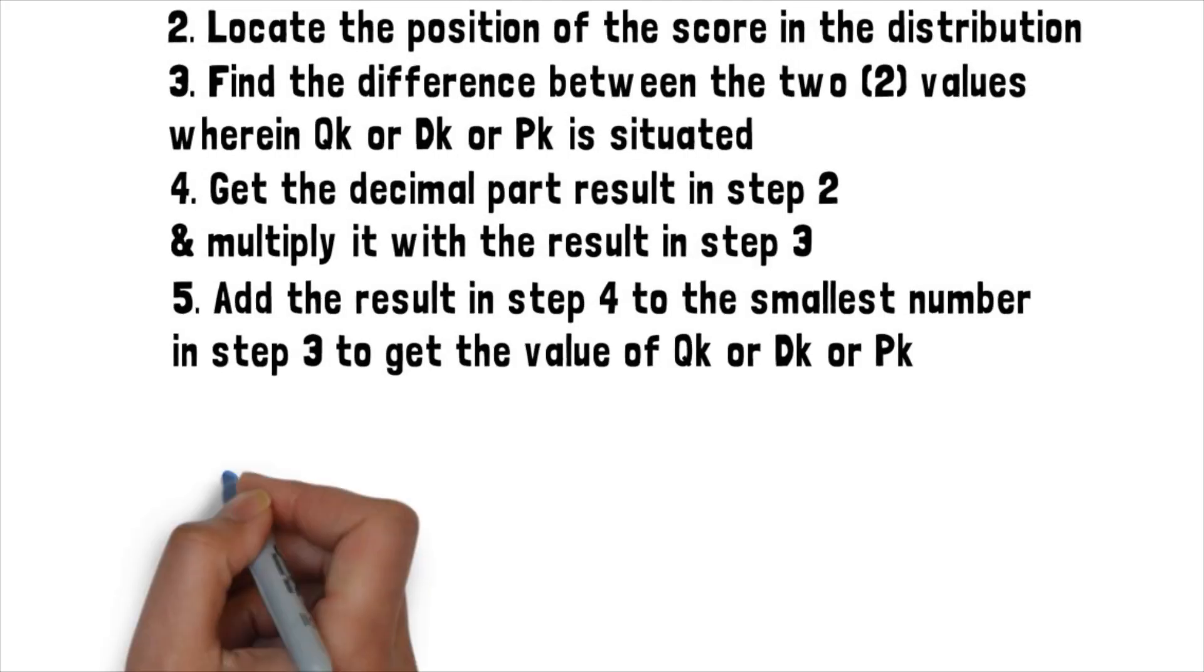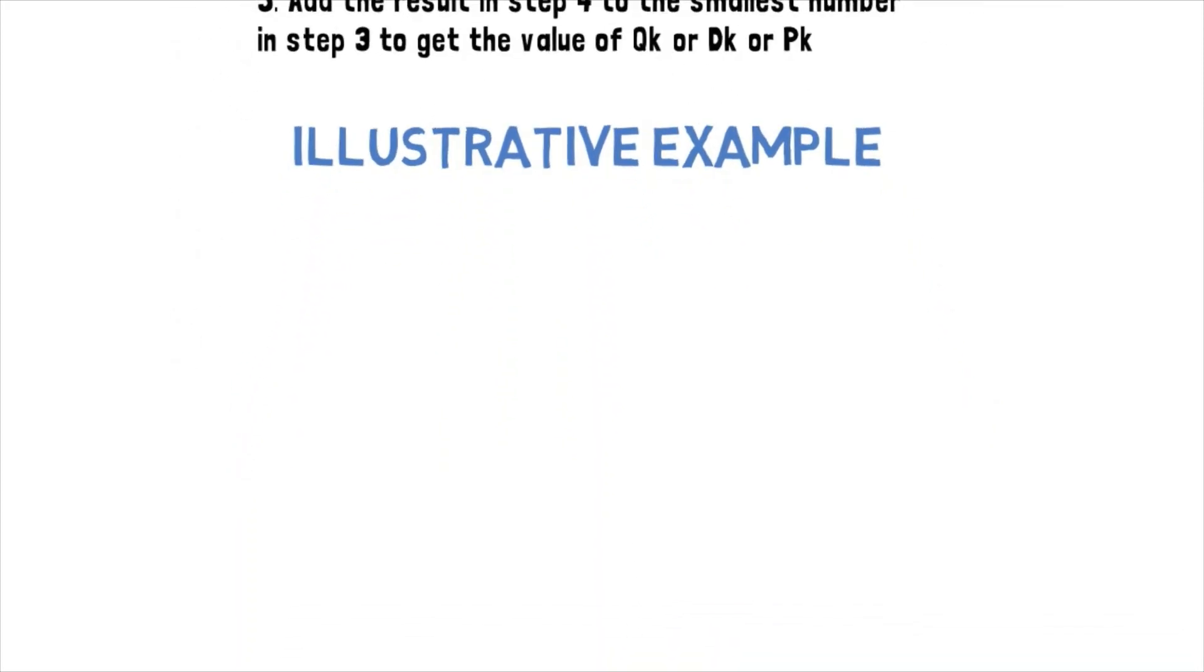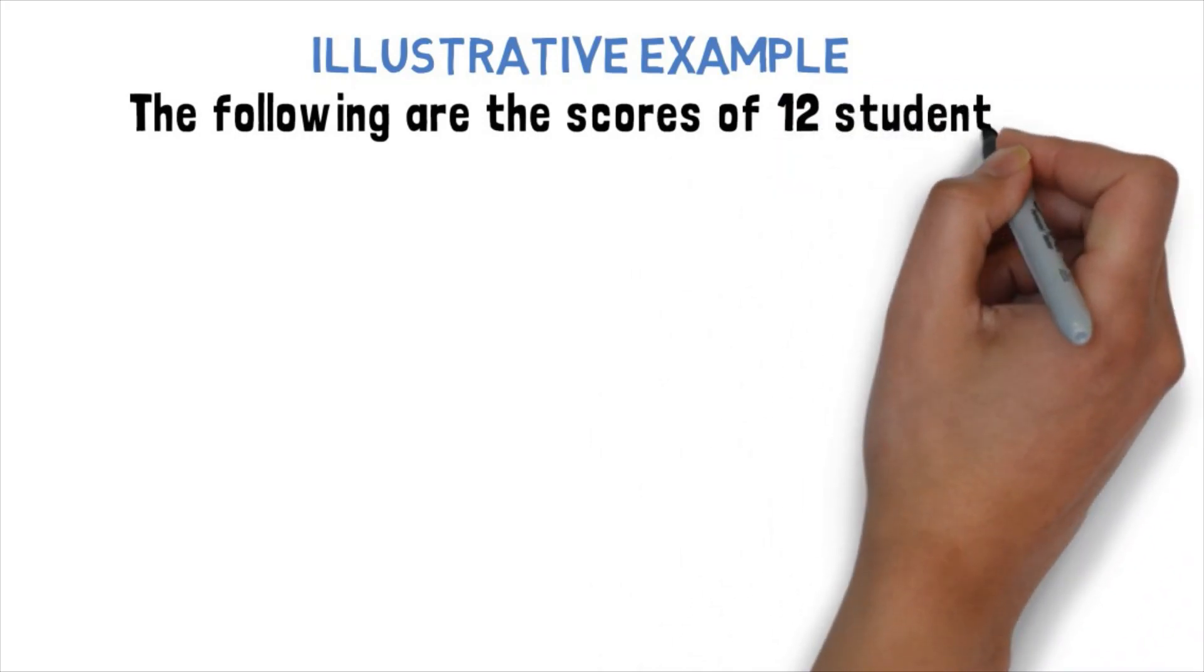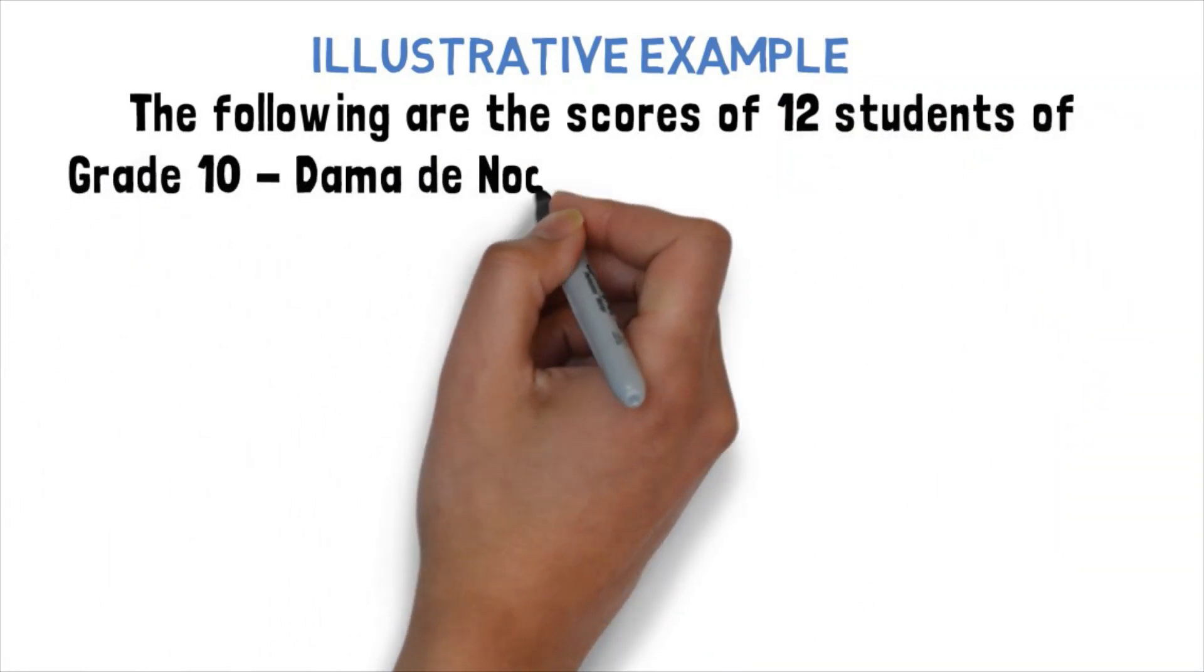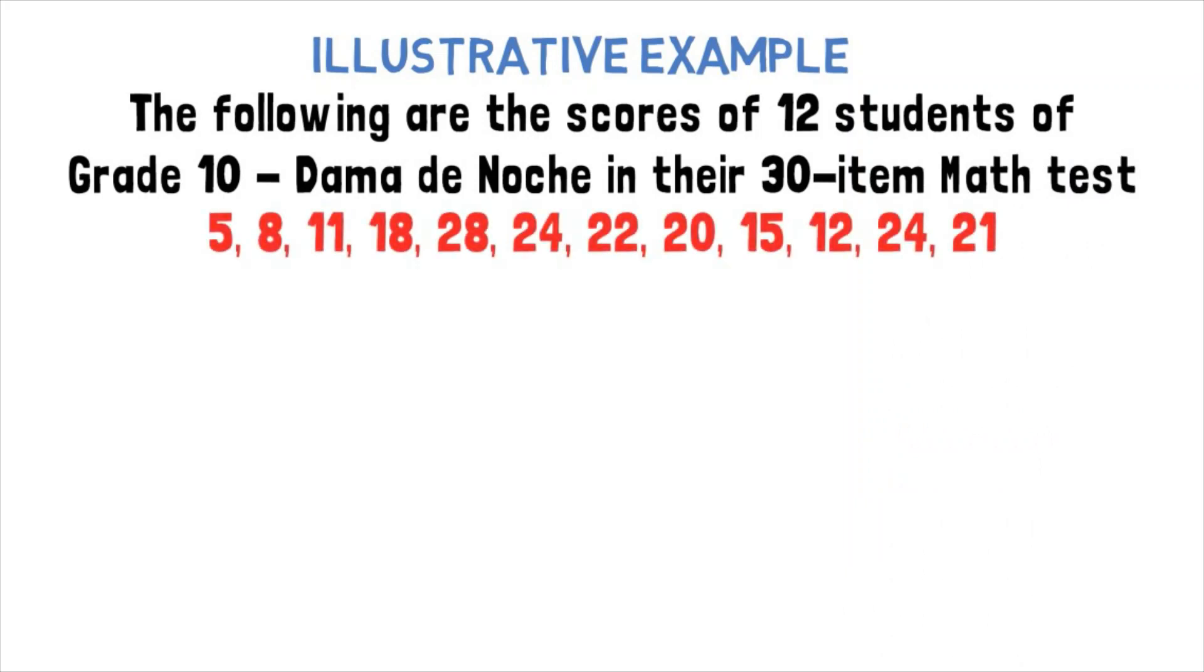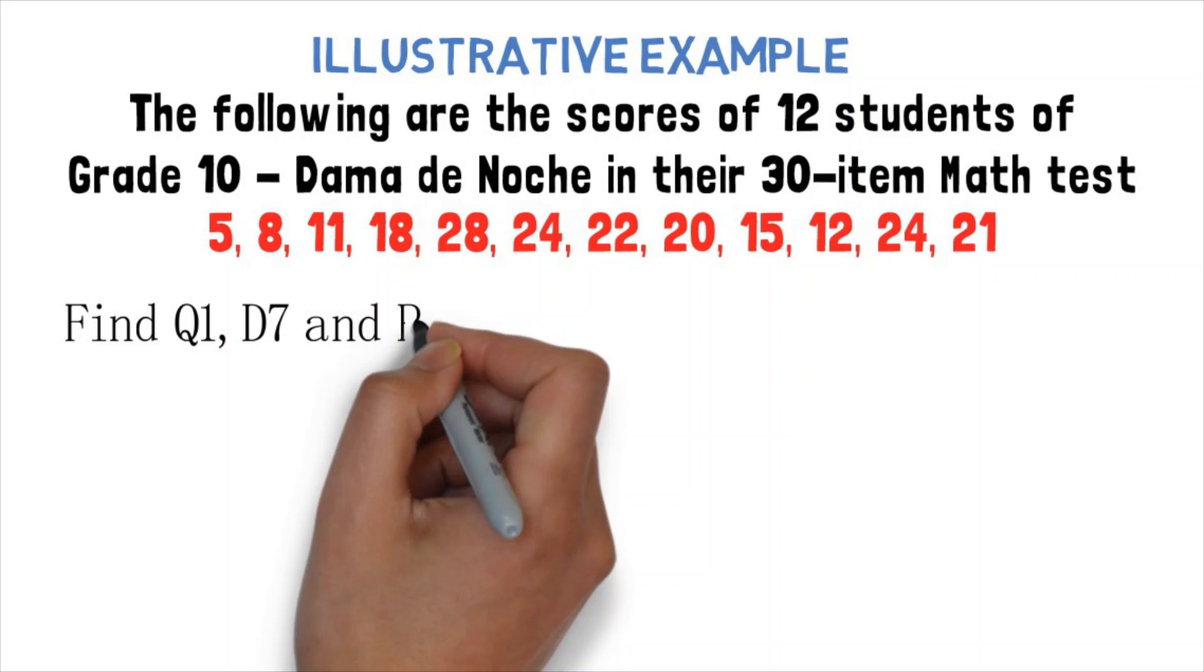To understand this better, let us have illustrative examples. Let's say that the following are the scores of 12 students of grade 10 Dama de Noche in their 30-item math test. From the given problem, let us solve for Q1, D7, and P45.